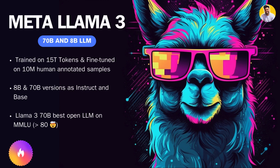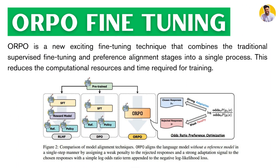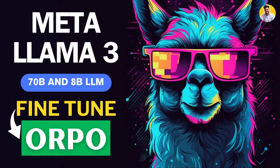The LLAMA 3 70 billion parameter model scores 80-plus on the MMLU benchmark test. In this video, I will show you how to fine-tune the LLAMA 3 large language model using a new fine-tuning technique called ORPO. ORPO combines traditional supervised fine-tuning with preference alignment into a single process, reducing computational resources and training time. Empirical results show ORPO outperforms other alignment methods across various model sizes and benchmarks.